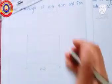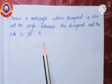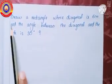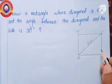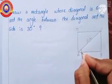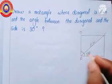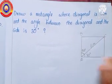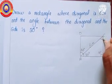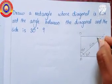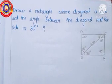Join the points and we will get the required rectangle. Can we draw rectangles of specified diagonals? For example, draw a rectangle whose diagonal is 6 centimeters and the angle between the diagonal and the side is 30 degrees. First draw a rough figure for reference. This is a rectangle with a diagonal 6 centimeters long. If this angle is 30 degrees, then the angle here is 60 degrees, and the angle at B is 90 degrees. Since the sum of angles in a triangle is 180 degrees, the angle at D is also 90 degrees.